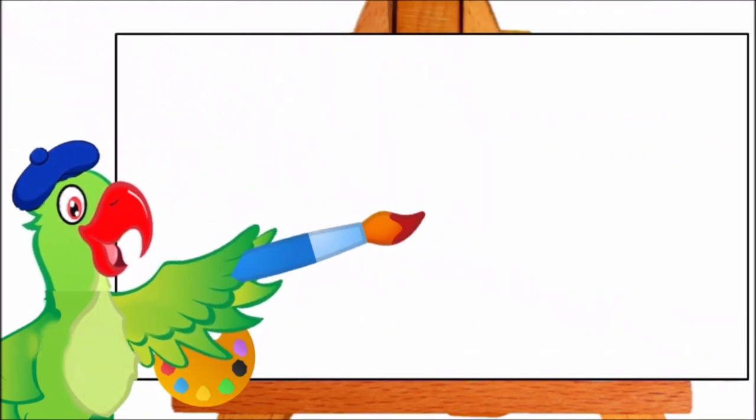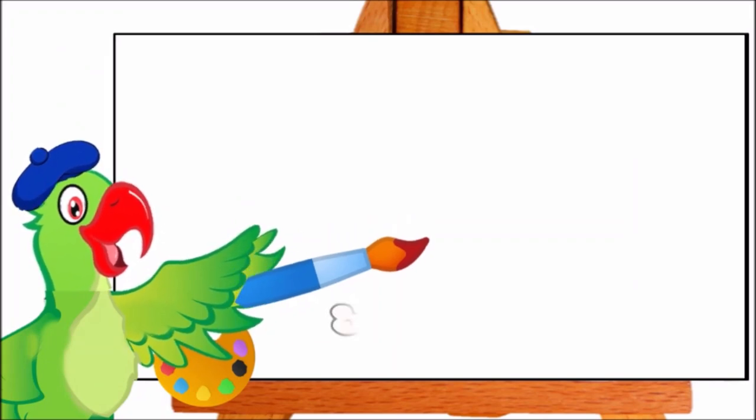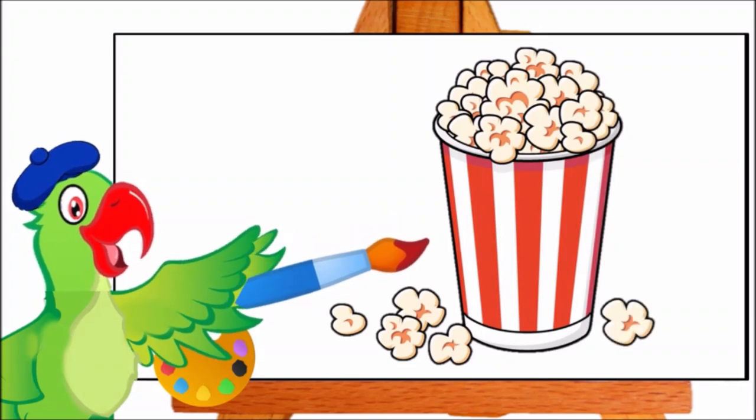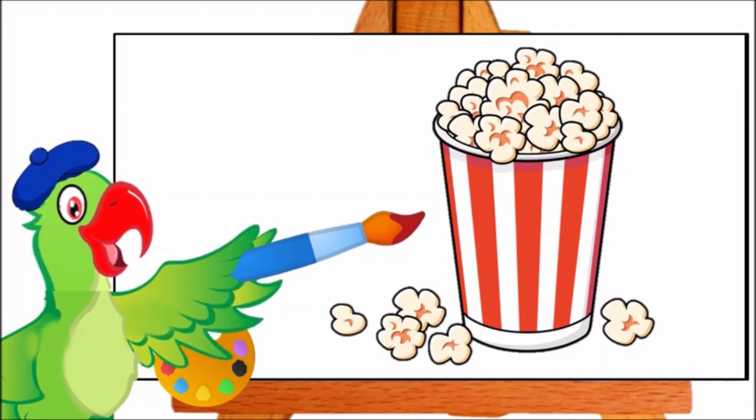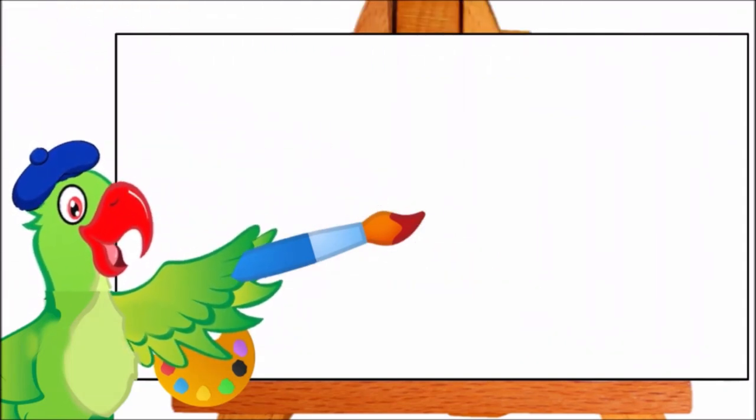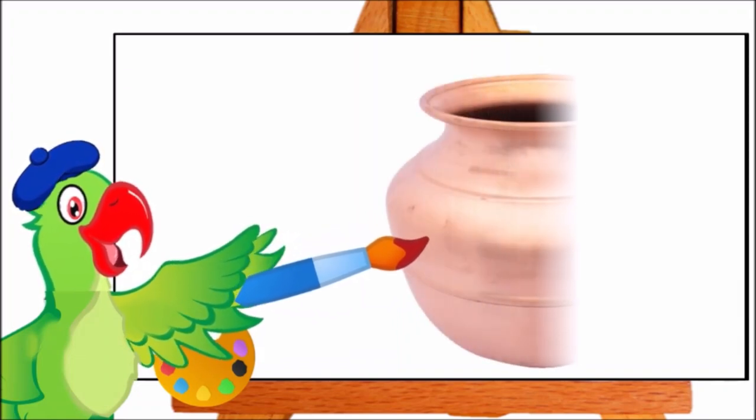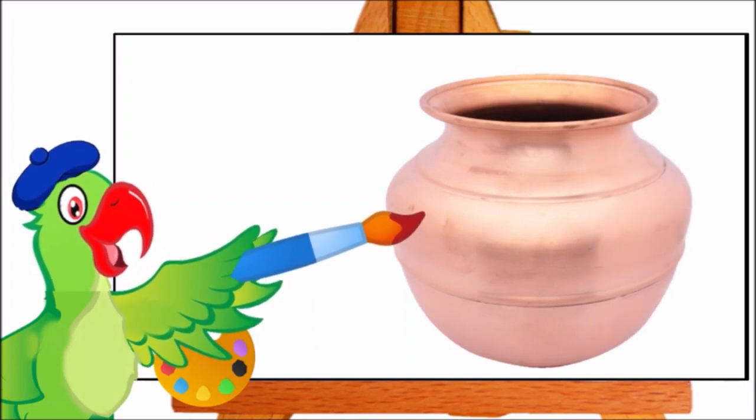Now I am going to paint something else. Can you tell me what is this? Think, think. Good. It is a pot. P-per pot.